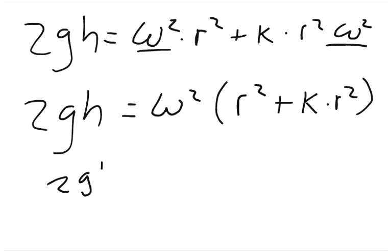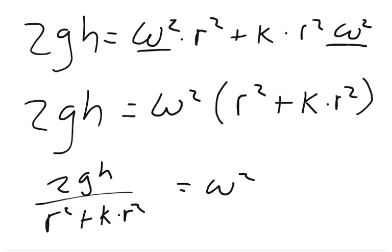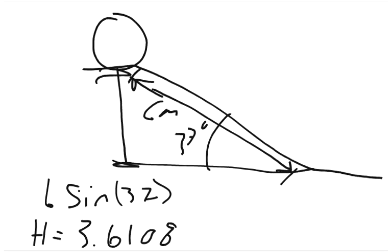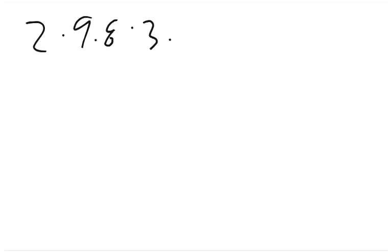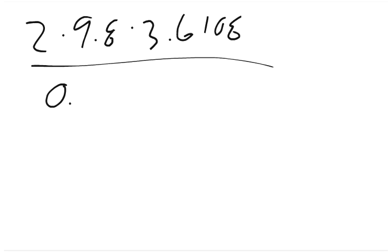Now all we have to do is isolate the angular speed. We divide both sides by the term r squared plus k times r squared, giving us omega squared. We take the square root of that to get our angular speed. We already solved for the height as 3.6108, so plugging in: 2 times 9.8 times 3.6108, divided by 0.2 squared plus k times 0.2 squared.